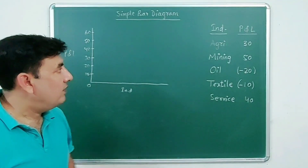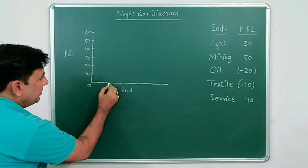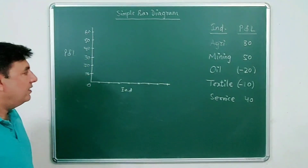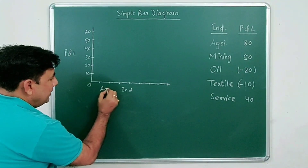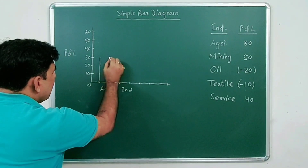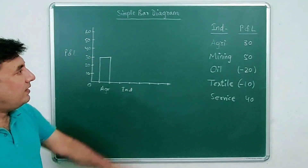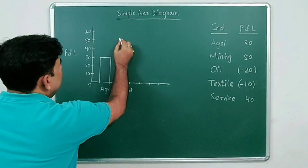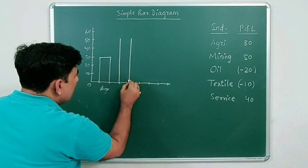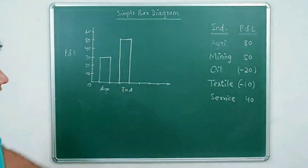Let's start with Agriculture — there is a profit of 30 crores, so mark this point and draw the bar up to 30. This is the bar for Agriculture. Then Mining is 50, so draw the bar for Mining up to 50 crores profit.